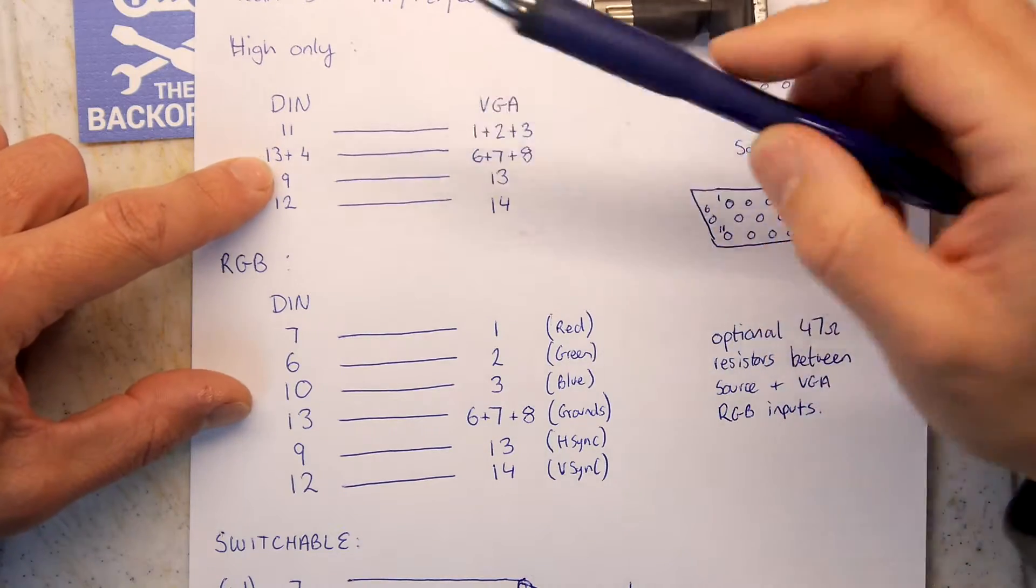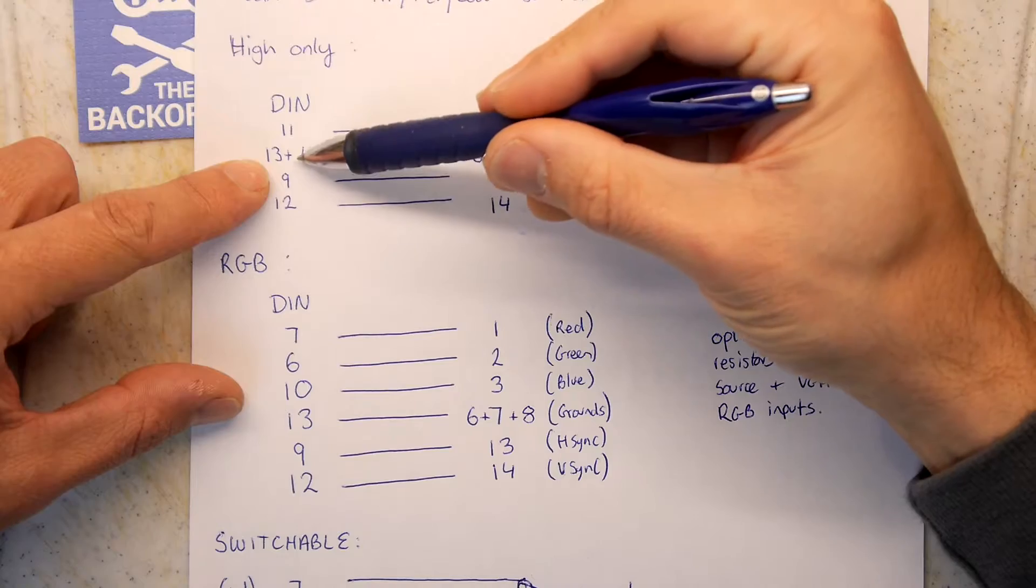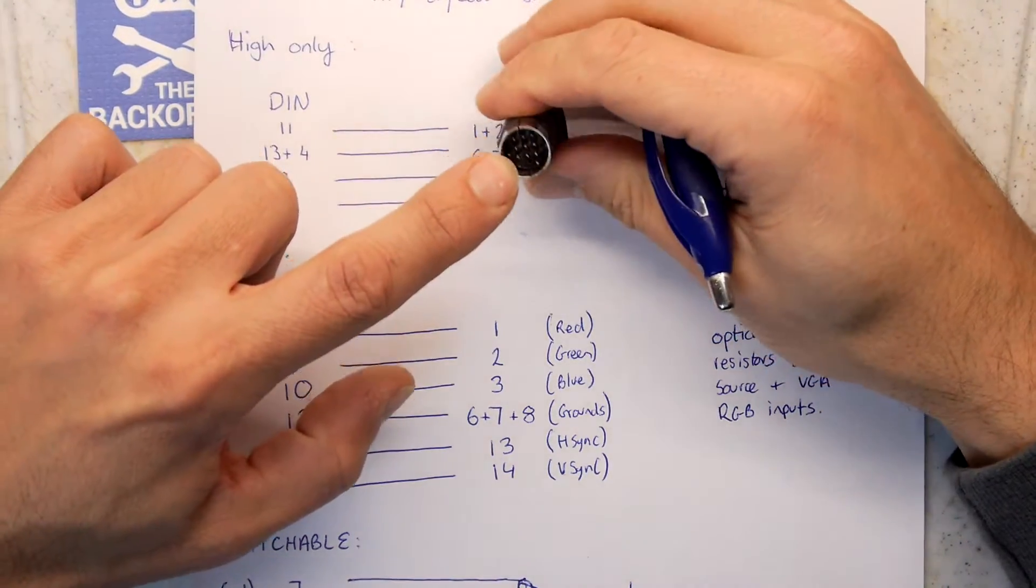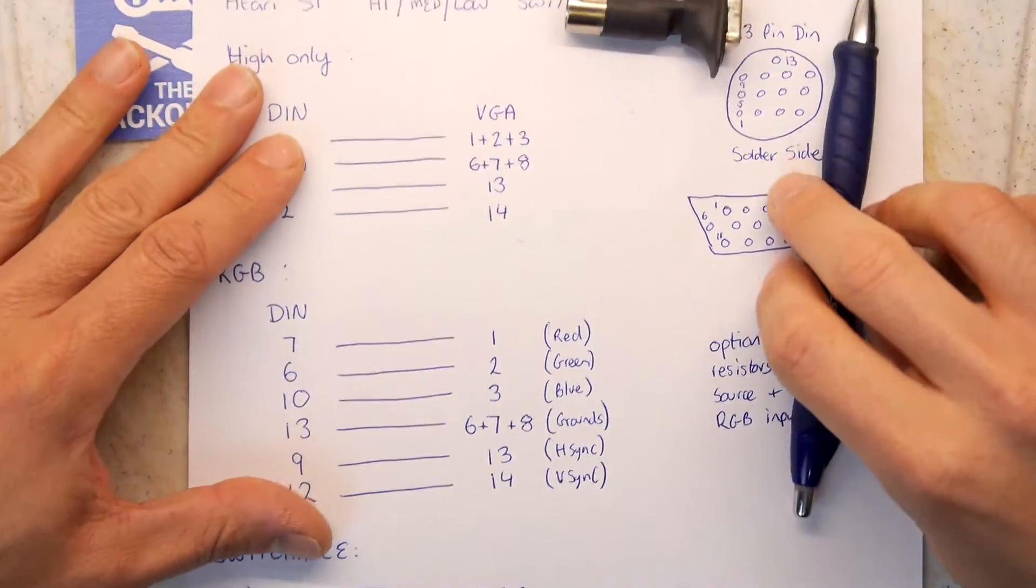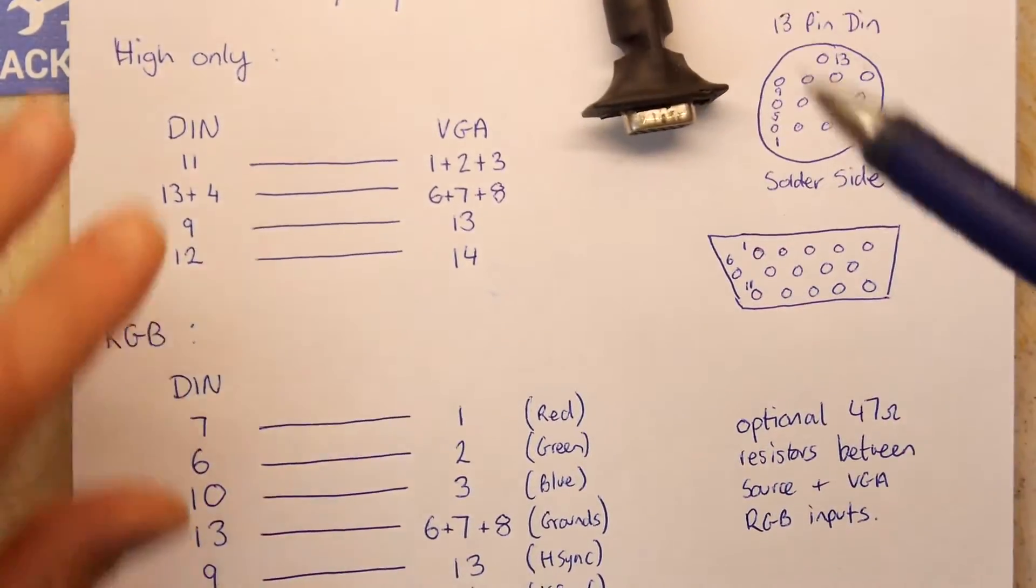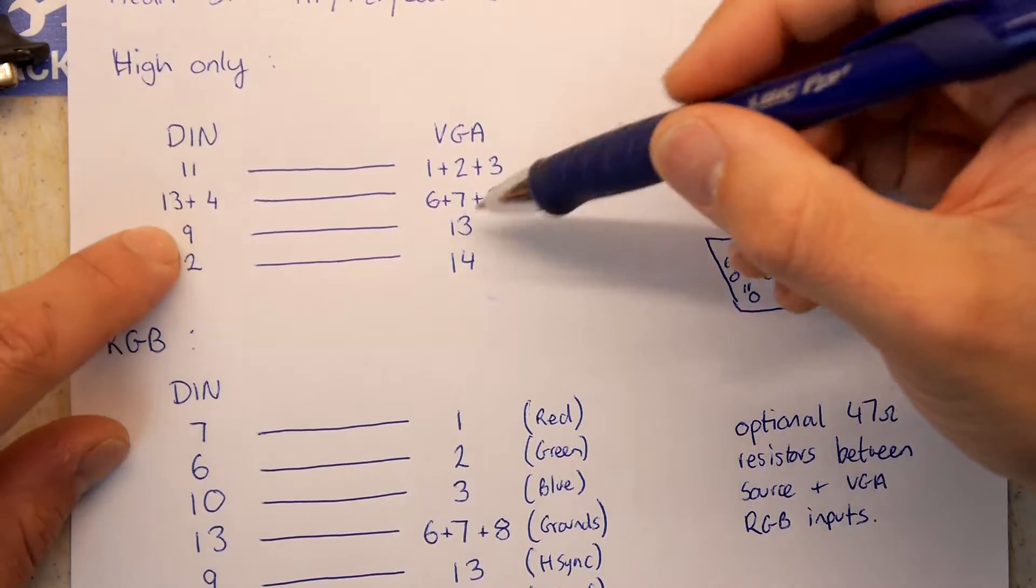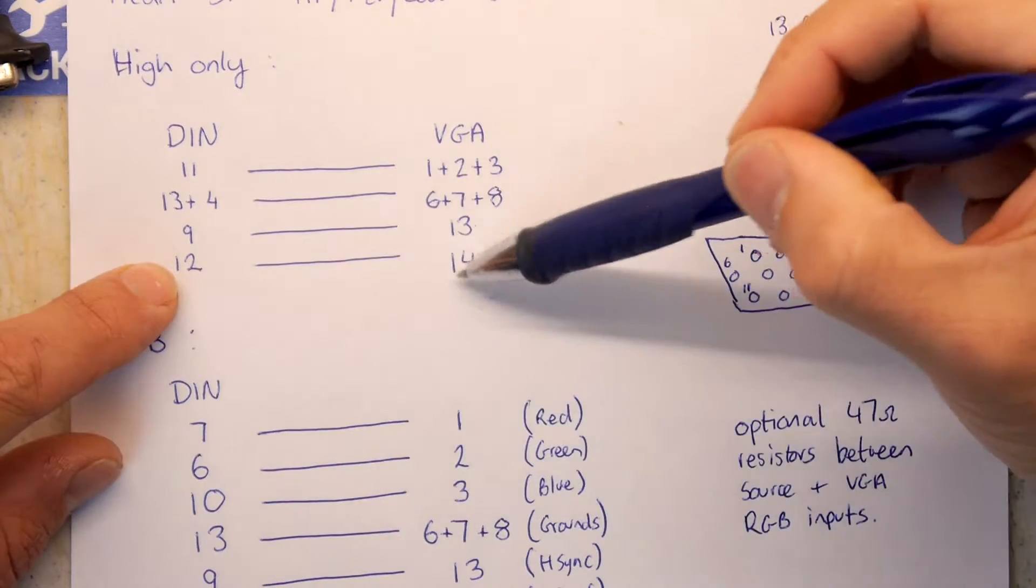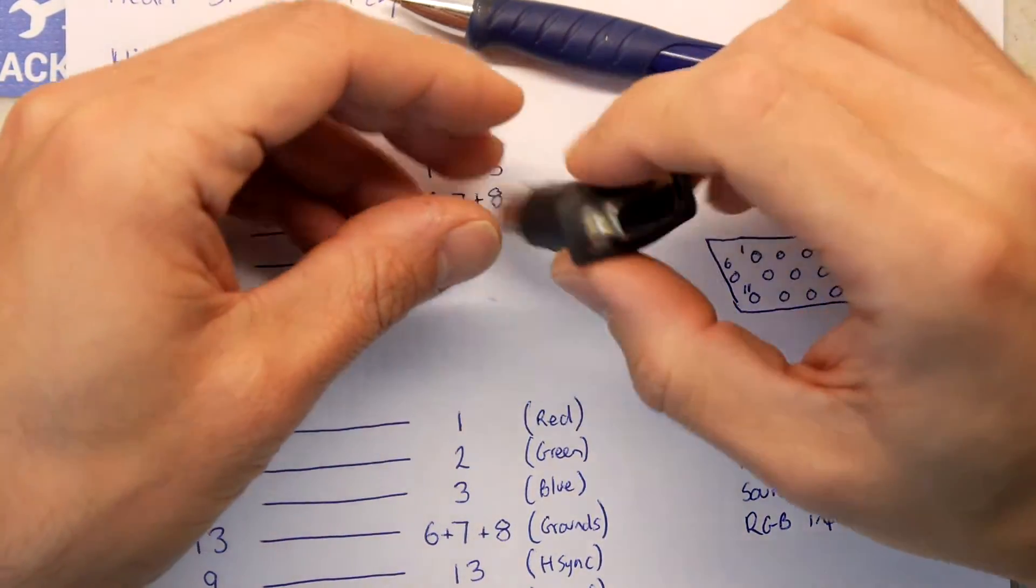13 and 4. 13 is ground and this is going to the RGB ground on the VGA. And then you're also connecting it to 4 in the DIN side because 4 is a high-res detect mode that the Atari will see and then start outputting things in high-res mode. So that's how the Atari knows that the Atari high-res monitors are plugged in. 9 and 12 are easy. This is the horizontal sync goes straight through to pin 13 and vertical sync goes straight through to pin 14. And that's pretty much what you get in this adapter.